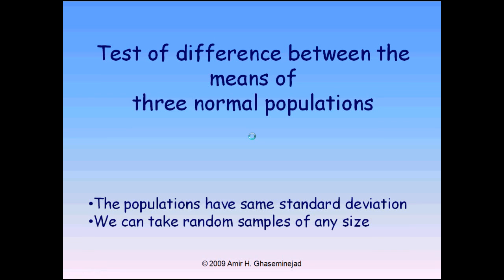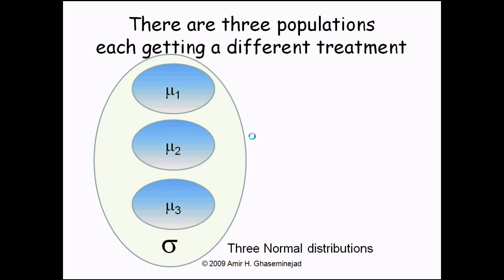In this presentation I will talk about the test of difference between the means of three normal populations. Let us assume that there are three populations, each with a normal distribution, and the standard deviations of the populations are the same. However, we have treated them with different treatments — for example, different types of drugs, or the three populations have been using different types of media.